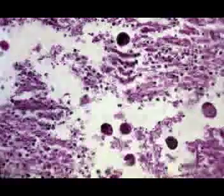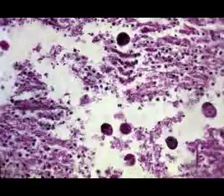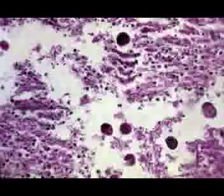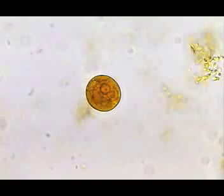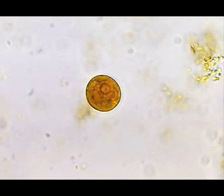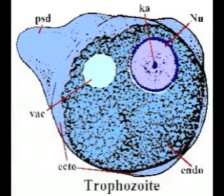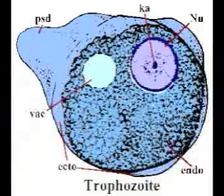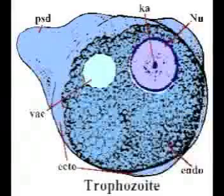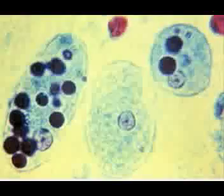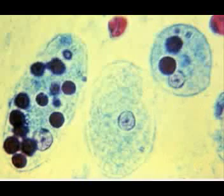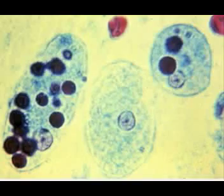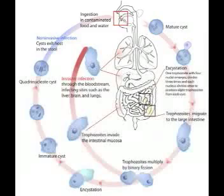Because of the protection trophozoites receive through the cell walls of the matured cysts, they can survive anywhere from days to weeks in the outside environment and are therefore responsible for the transmission of the parasite. Trophozoites passed in the stool are rapidly destroyed once outside the body and would not survive exposure to the gastric environment. Transmission can also occur through exposure to fecal matter during anal sexual contact, in which case not only cysts but also trophozoites could become infectious.